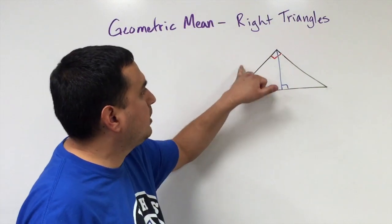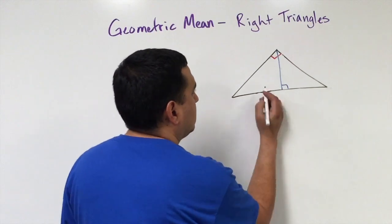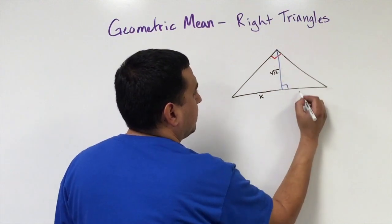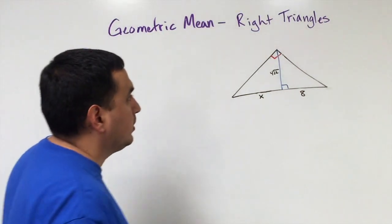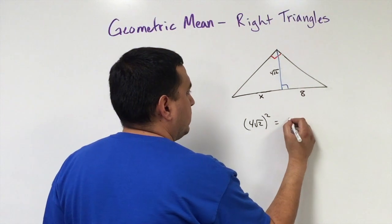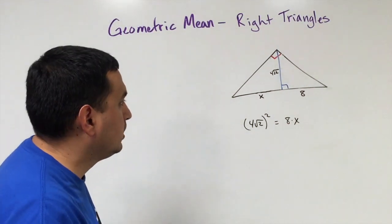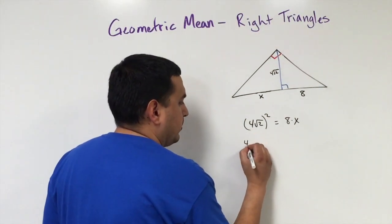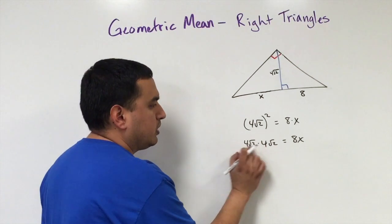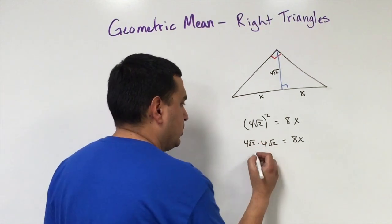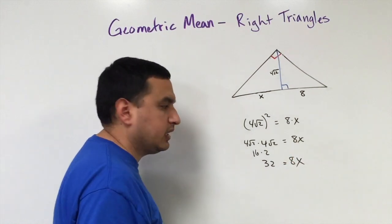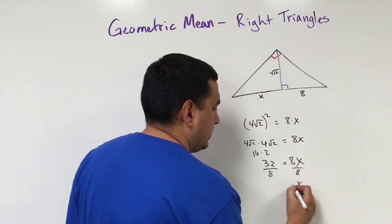The other example is when the variable is on the hypotenuse itself. Let's say x is one segment and the leg is 4 square roots of 2, with the other segment labeled h. The height squared equals the product of the two hypotenuse segments: (4√2) squared equals 8 times x. Squaring 4√2 gives 16 times 2, which is 32. So 8x equals 32, and dividing by 8 gives x equals 4.